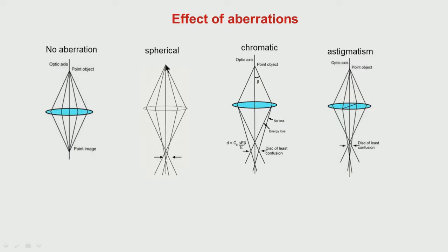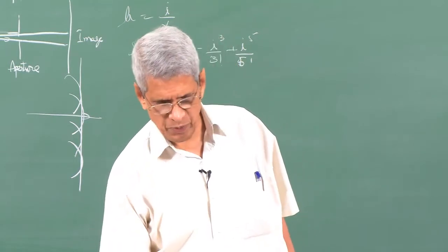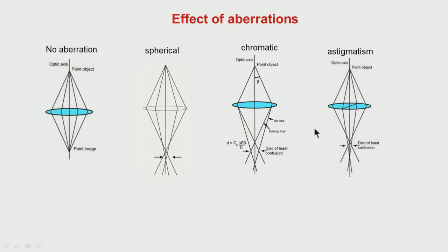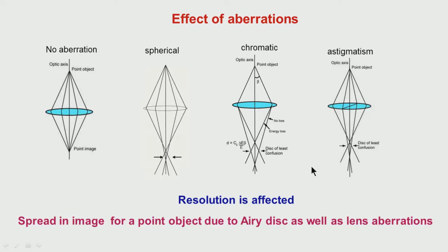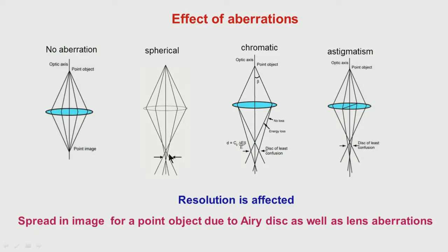Spherical aberration causes a point object to appear as a spread image. Chromatic aberration similarly spreads the image, but it has nothing to do with the lens geometry — it arises from the non-monochromaticity of the beam. Other lens defects include astigmatism, coma, and curvature of field. Because of aberrations, the resolution is worsened, and the total spread is the combination of the Rayleigh criterion spread and the spherical aberration contribution.